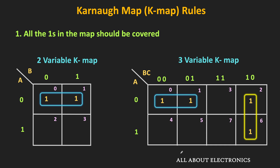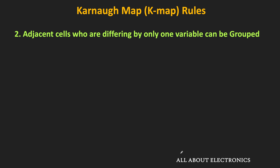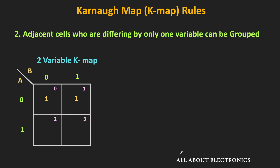Now the question is how to perform this grouping. For the grouping, we can group the adjacent cells which are differing by only one variable. For example, in the first two cells, the variable A is not changing, while the variable B is changing as we go from minterm M0 to M1. Since only one variable is changing, it is possible to group these two minterms.